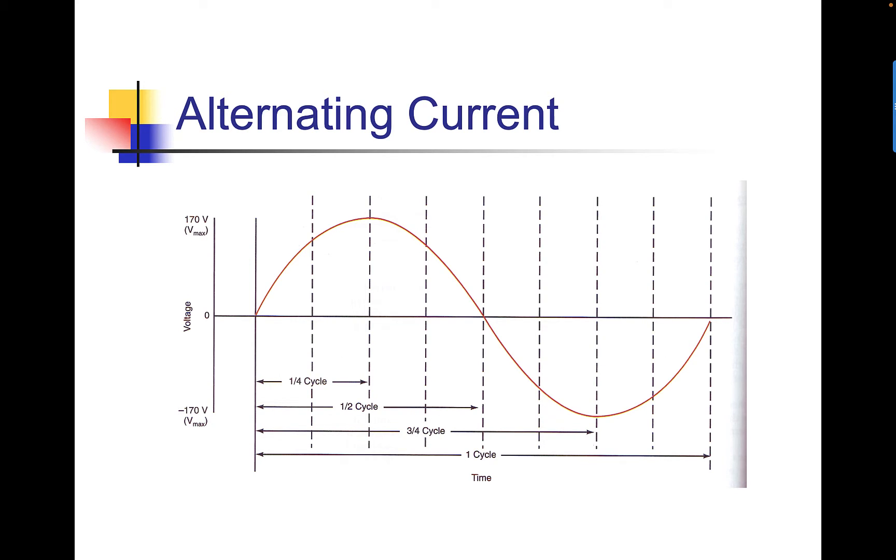This is an example of an alternating current wave form. We start up here at the zero, which is my middle line. Then we go up to maybe 170 volt max. Then we come back down through zero.